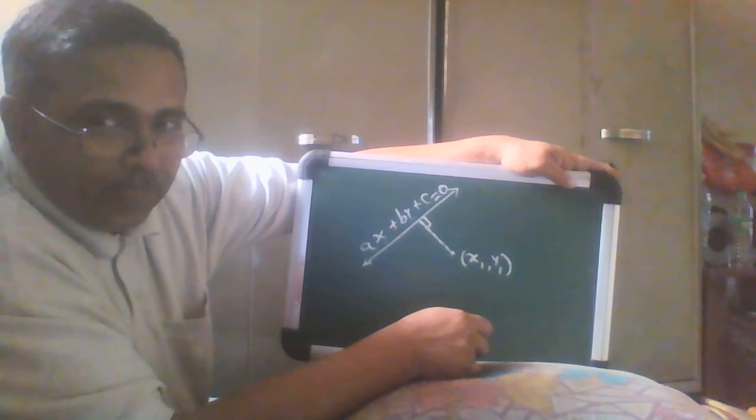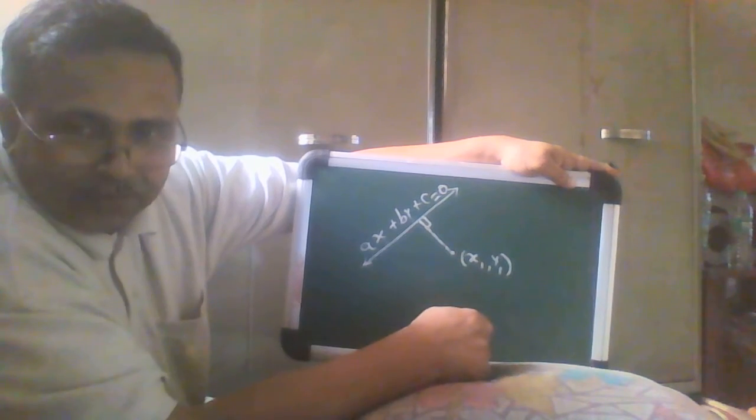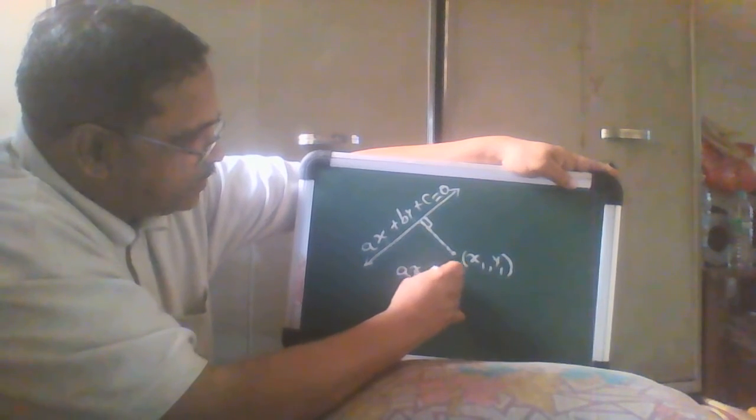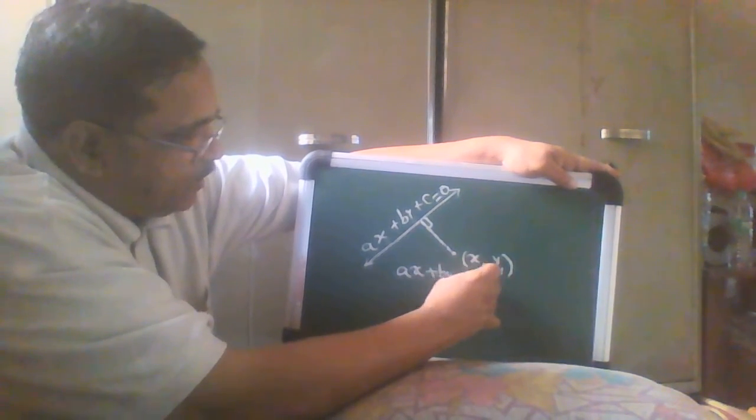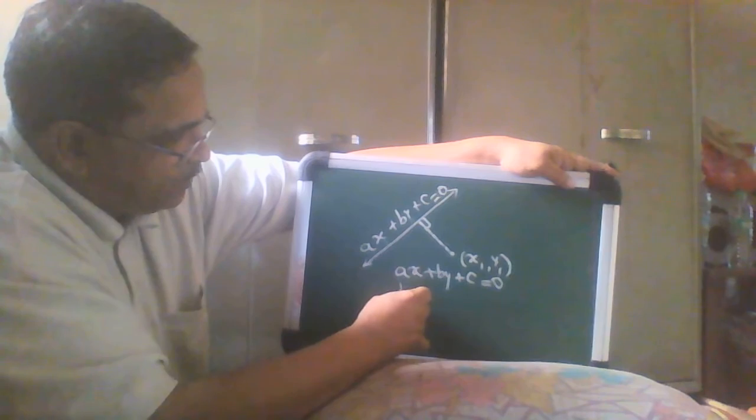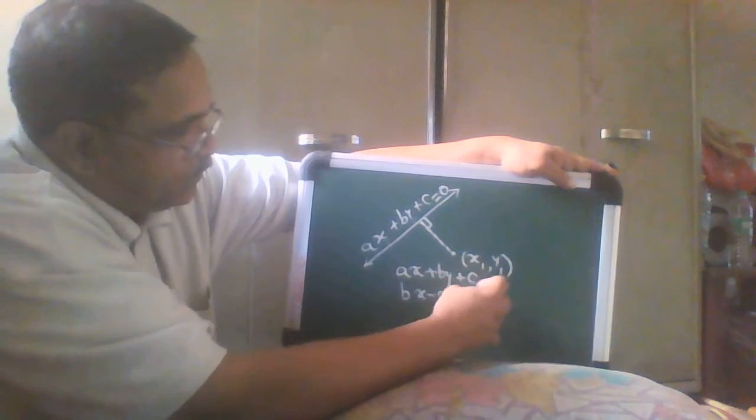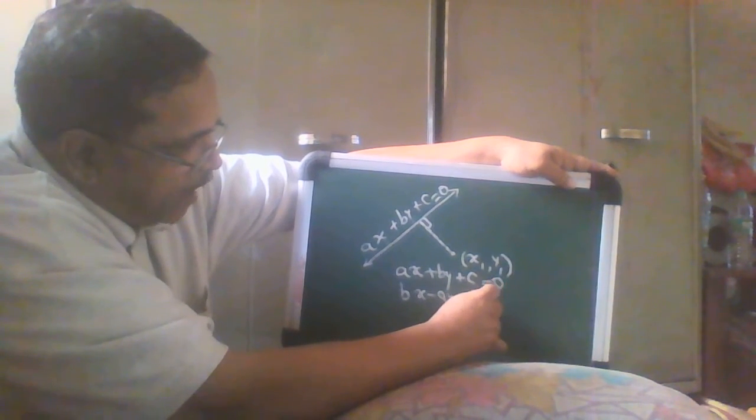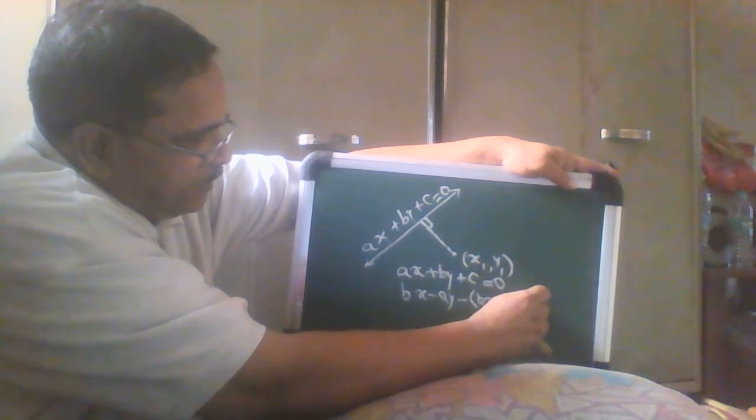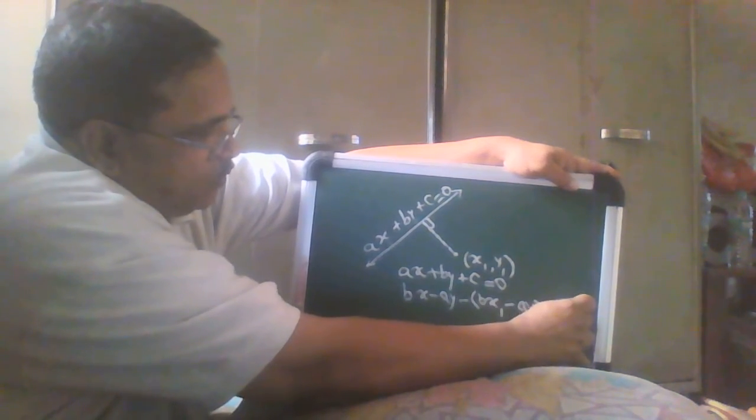How will you write equation of a line perpendicular to this line and passing through this point? It is very simple. This equation is ax plus by plus c is equal to zero, and now the new equation will be bx minus ay minus bracket bx1 minus ay1, bracket complete, is equal to 0.